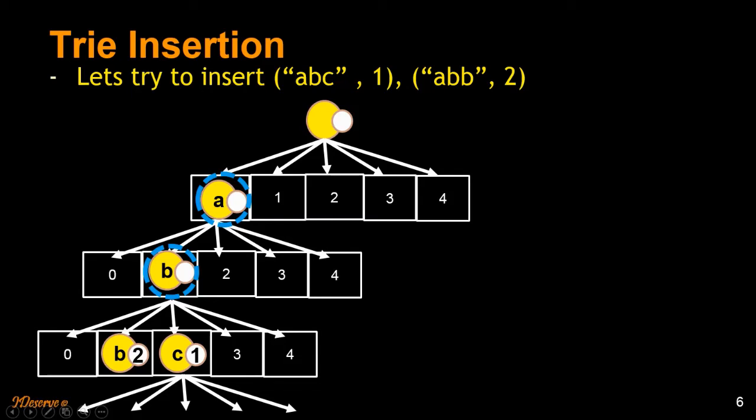One thing to notice here is we are traversing three levels for A, B, C. We are traversing three levels for A, B, B. What does that tell you? It tells you the time complexity of a Trie insertion. It will be at most order of N. What is N? N is the length of the string. So a Trie insertion time complexity is order of N. It's very efficient.